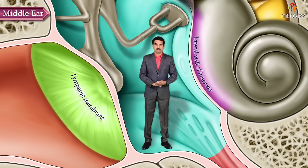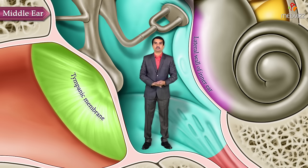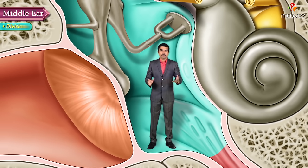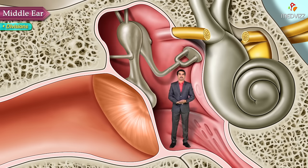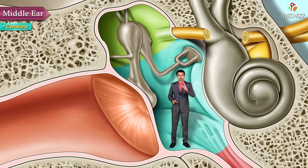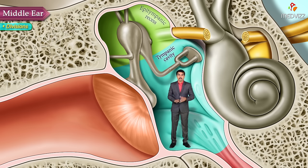The middle ear cavity is called the tympanic cavity. The middle ear can be divided into two parts: the first one is called the tympanic cavity and the second one is called the epitympanic recess.